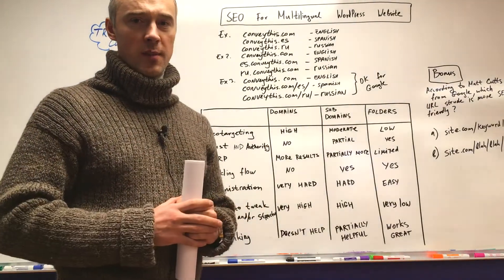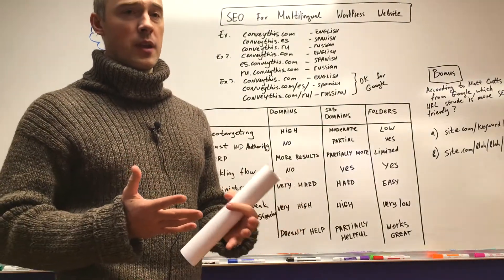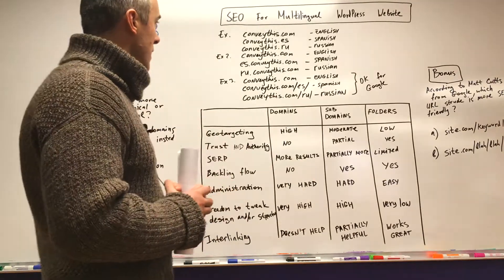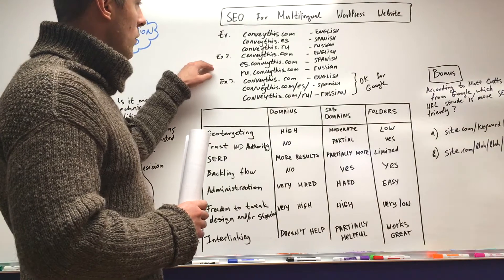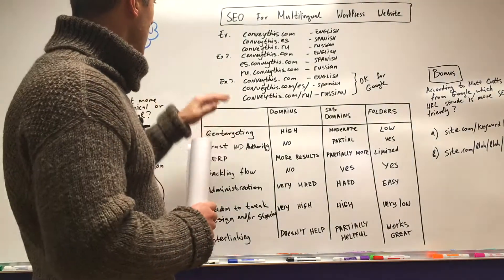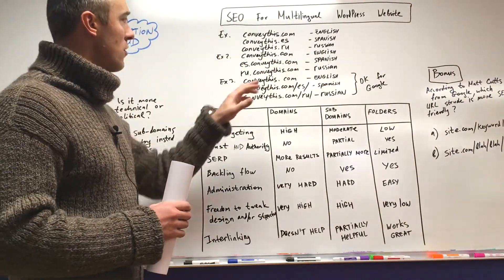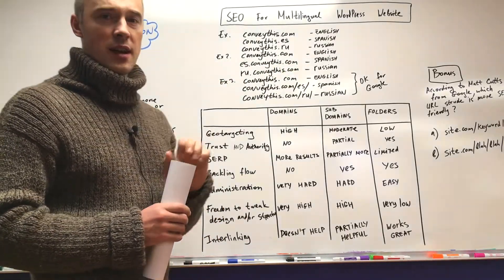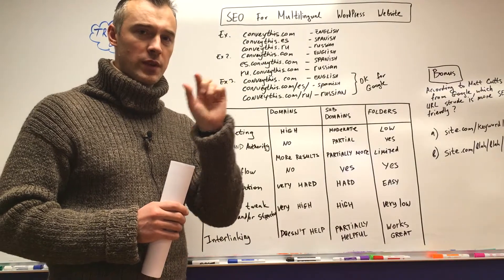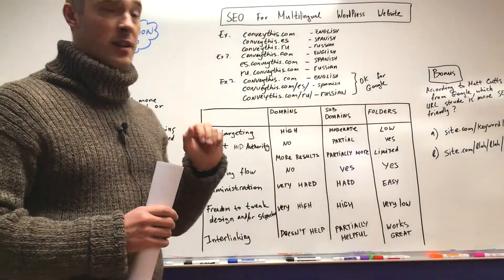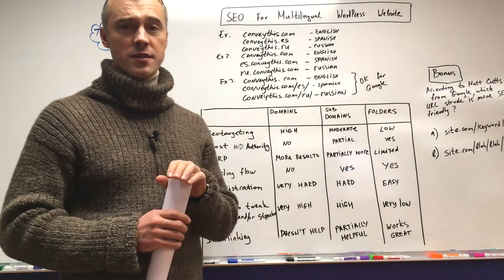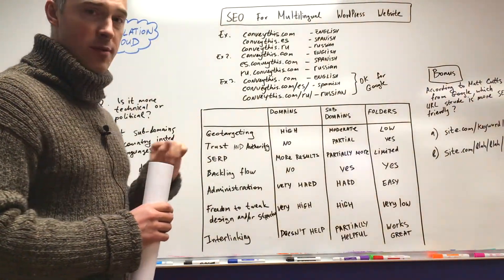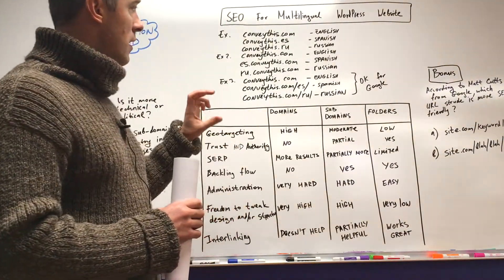The second approach is when you have only one domain name such as conveythis.com and you do not buy anything else; you just set up subdomains. In example number two we have the subdomain approach: conveythis.com is in English and all the Spanish and Russian versions are added as small prefixes to the main domain — es.conveythis.com and ru.conveythis.com.